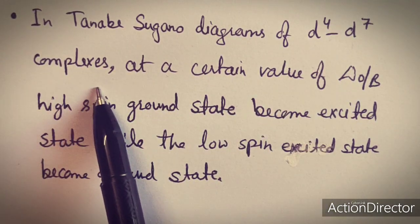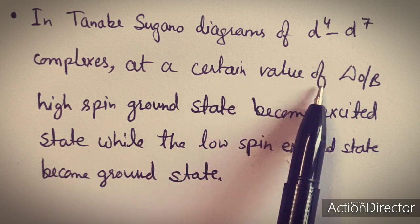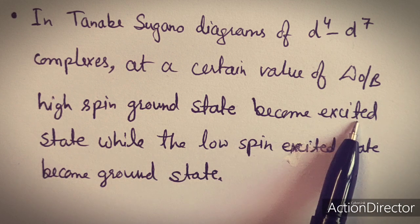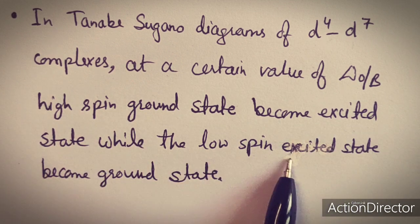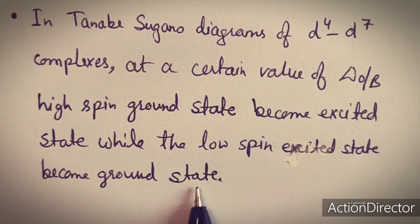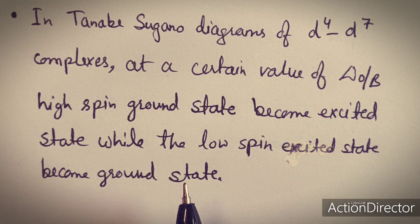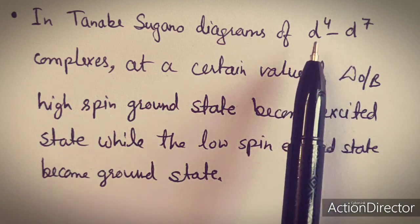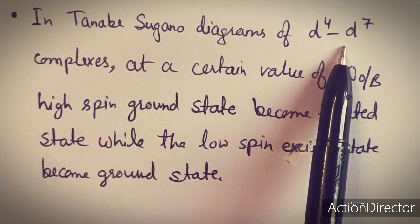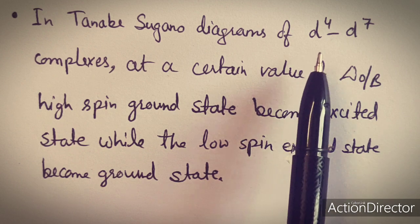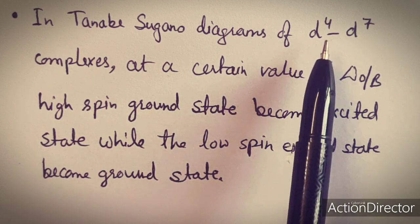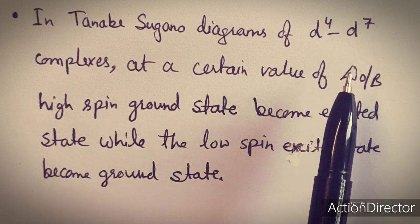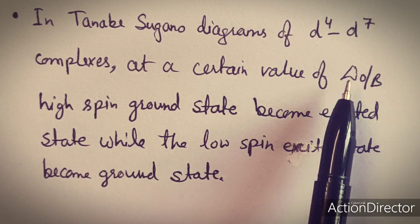In the Tanabe-Sugano diagram for d4 to d7 complexes, at a certain value of delta-o upon B, the high spin ground state becomes an excited state while the low spin excited state becomes the ground state. For d4 to d7 configurations, the ground states are different for high spin and low spin complexes, causing a discontinuity in the Tanabe-Sugano diagram at a particular value of delta-o upon B.